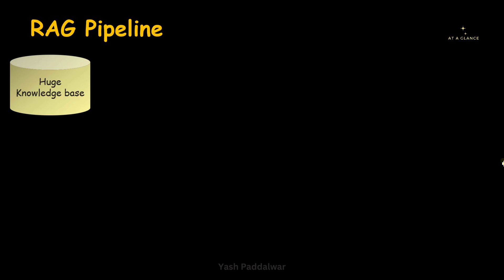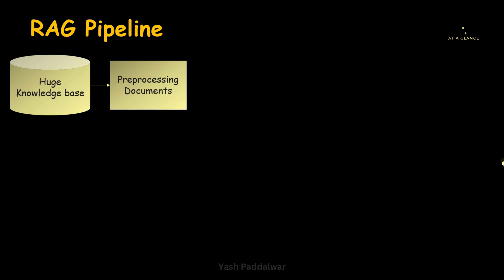We cannot simply feed this particular knowledge base into the RAG pipeline. We'll have to first pre-process it — make it in a particular format so that it can be uniformly used throughout the pipeline. That is why here comes the pre-processing stage, where we pre-process the knowledge base documents so that they can be dumped into the pipeline for better search results. For example, the documents in the knowledge base can be divided into multiple chunks of the same sizes.